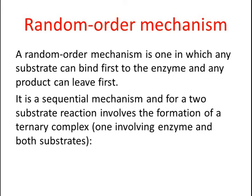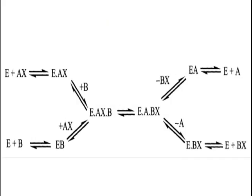It is a sequential mechanism and for a two substrate reaction involves the formation of a ternary complex, one involving enzyme and both substrates. So first in this reaction, E binds with AX forming E-AX. Then another substrate binds to this compound which gives E-AX-B. Similarly, E can bind with B to form EB.